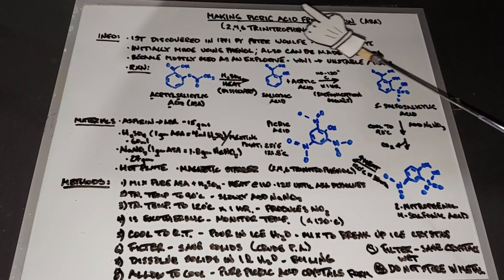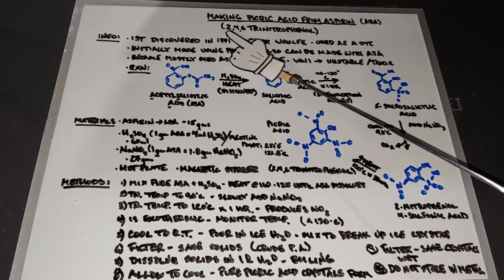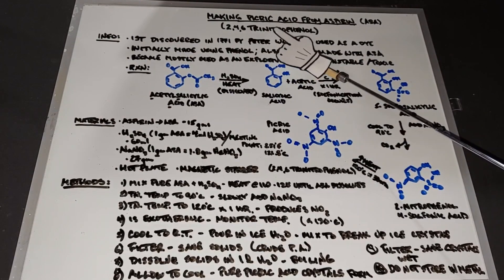Let's go make some picric acid crystals out of aspirin, also known as 2,4,6-trinitrophenol.